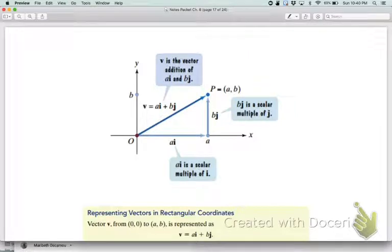i is our horizontal unit vector. So whatever number a is, that's how many i's I need to go horizontally, maybe 5. And then the vertical distance is going to be however many j's we need to go. That's how we get that vector.